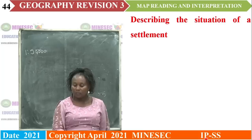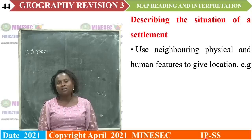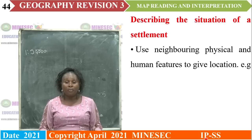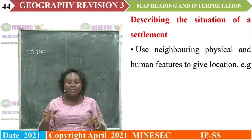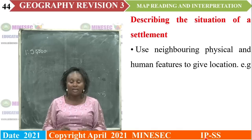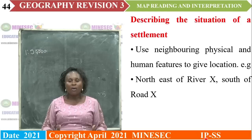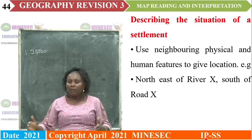Situation — what is situation? Those things that surround a settlement. For instance, somebody wants to come to your house and you have to describe the direction of your home. You will be citing those prominent things around that can lead the person to your home. Situation refers to those physical and human features surrounding a settlement that can help locate it — for instance, our house is near the hospital, or our school is in between this road and that road.